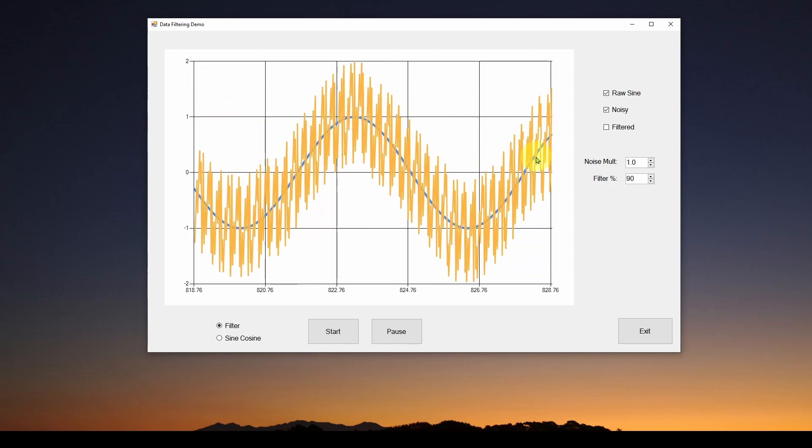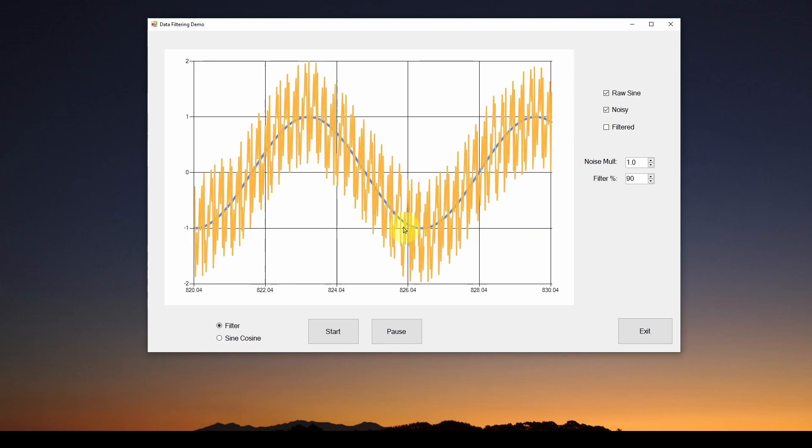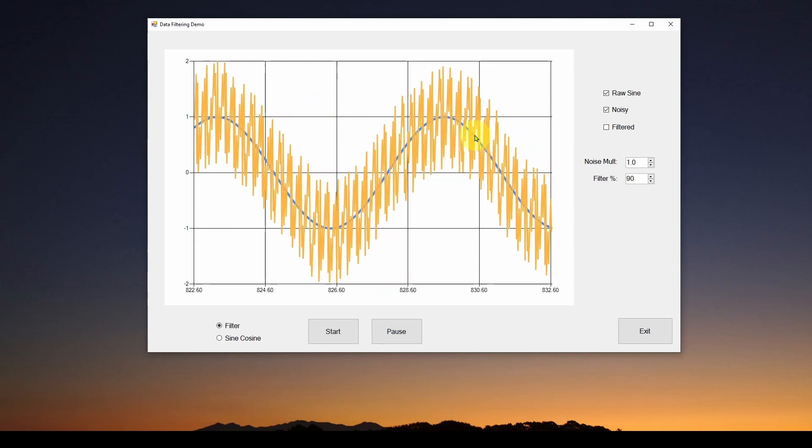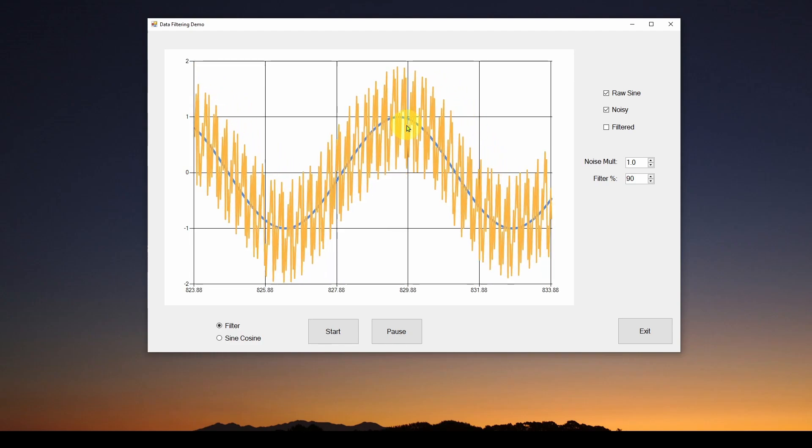and you might decide you want to get rid of it and just hold on to the correct data. In this case, either the high frequency, what looks like noise, or you want to hang on to this low frequency sine wave. So how can you do that?